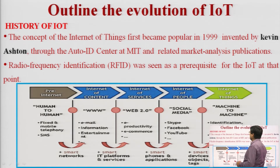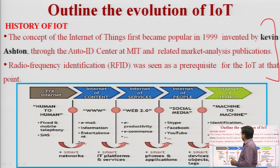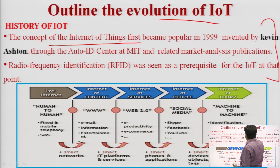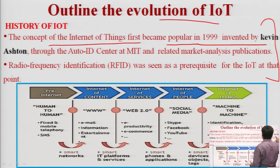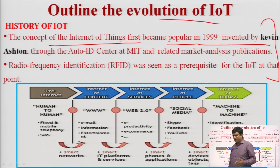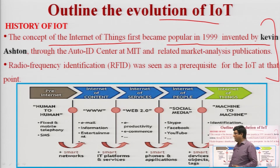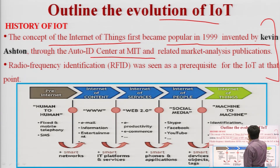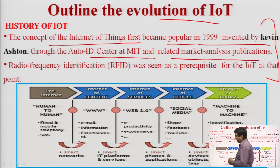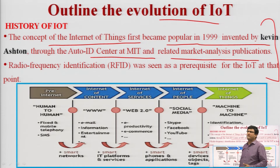The concept of IoT first became popular in 1999. The term IoT was first coined by Kevin Aston through the Auto-ID Centre at MIT and related market analysis publications. RFID was seen as a prerequisite for IoT at that point, and it remains a main technology enabling IoT.